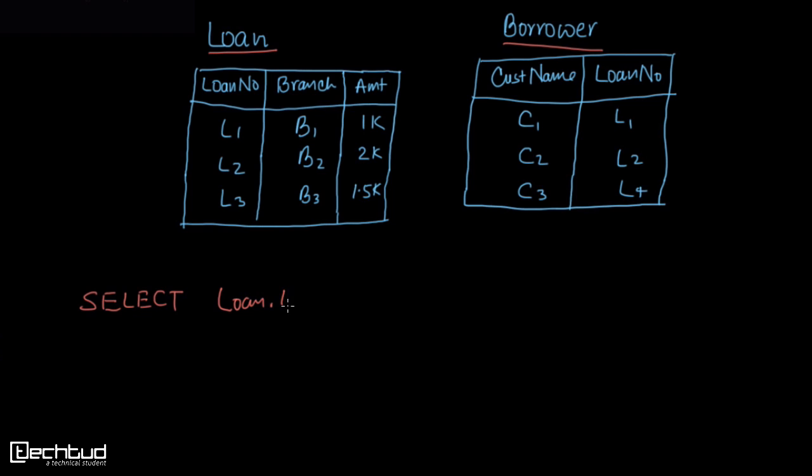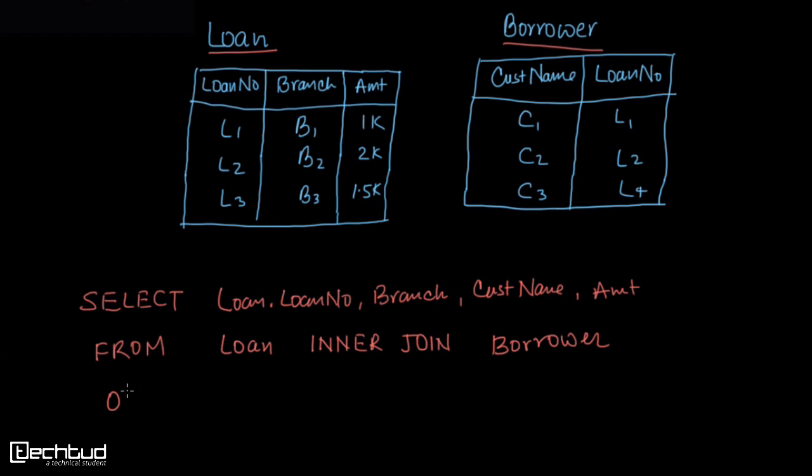branch, customer name, and amount. We will write SELECT Loan.LoanNo, Branch, CustName, Amt FROM Loan INNER JOIN Borrower ON Loan.LoanNo = Borrower.LoanNo.